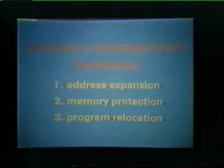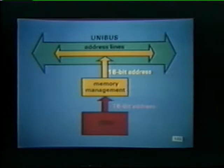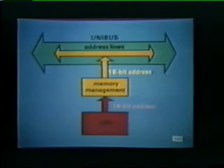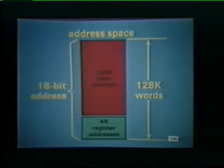Let's discuss each of these functions beginning with address expansion. When the memory management unit is incorporated in the PDP 11 system, it is placed between the central processor and the Unibus address lines. Once enabled, the memory management unit converts 16-bit addresses supplied by the central processor into expanded 18-bit addresses that are transmitted over the Unibus. The expanded 18-bit address increases the computer's address space to a maximum of 128K words.